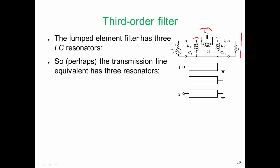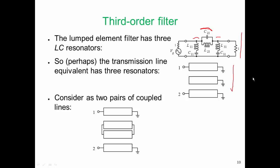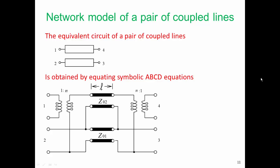The way we analyze this circuit is that we would consider this as two pairs of coupled lines. The circuit shown on the bottom here, with the transformers, is our circuit model for a pair of coupled lines. The way we show the equivalence is that we equate the ABCD parameters of the two circuits.